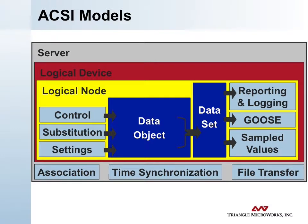This diagram shows the organization of the ACSI models and their scope. The server represents a communications capability at some address. The services you do directly with a server include the ability to associate or make a connection with it, to do time synchronization, and to do file transfers. These abstract services operate at the server level. Within a server are multiple logical devices, which may or may not correspond to different physical devices behind the server, depending on how you organize a gateway.